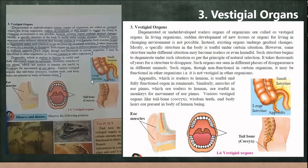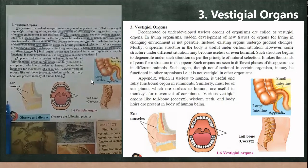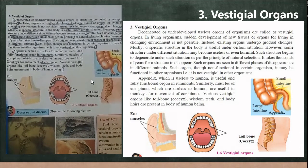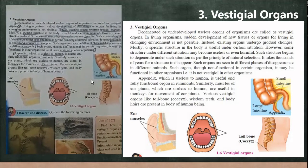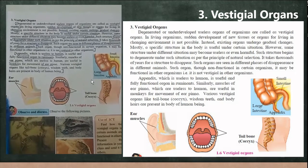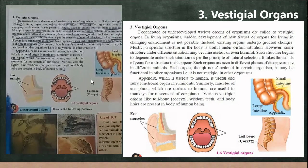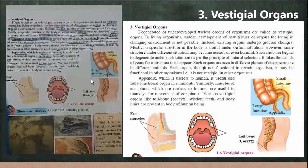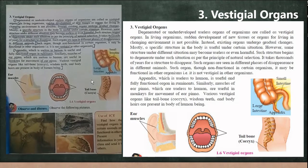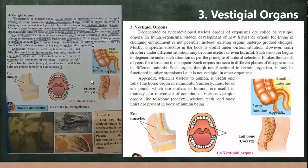These structures are called vestigial organs — they may be non-functional or useless in some organisms, while still being useful in others. The existence of these degenerated or underdeveloped organs is one of the proofs that we originated from a common origin. For example, the ear pinna muscles are useful in monkeys but not in humans, and the appendix was useful in our ancestors — these are proof of common origin.